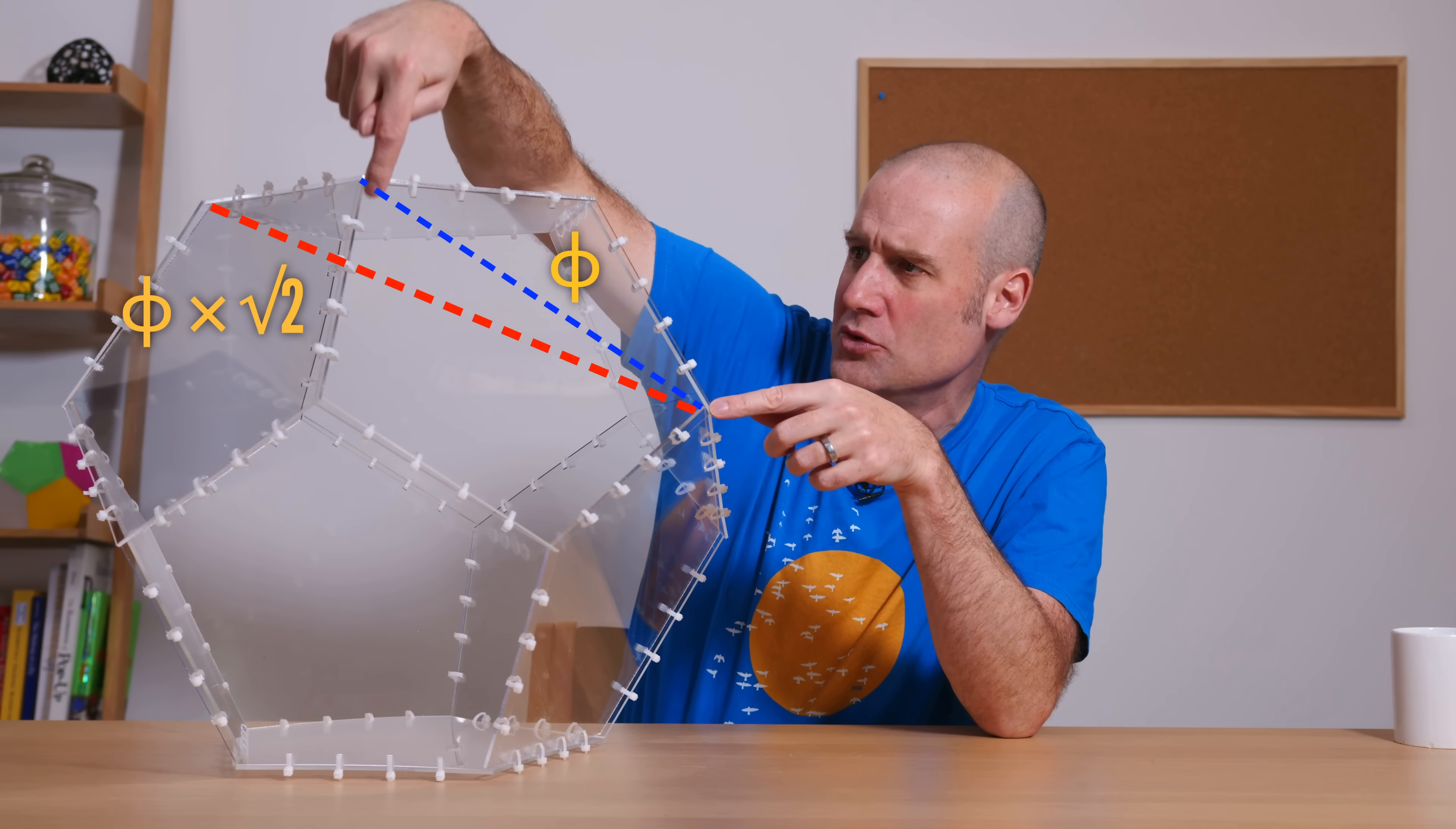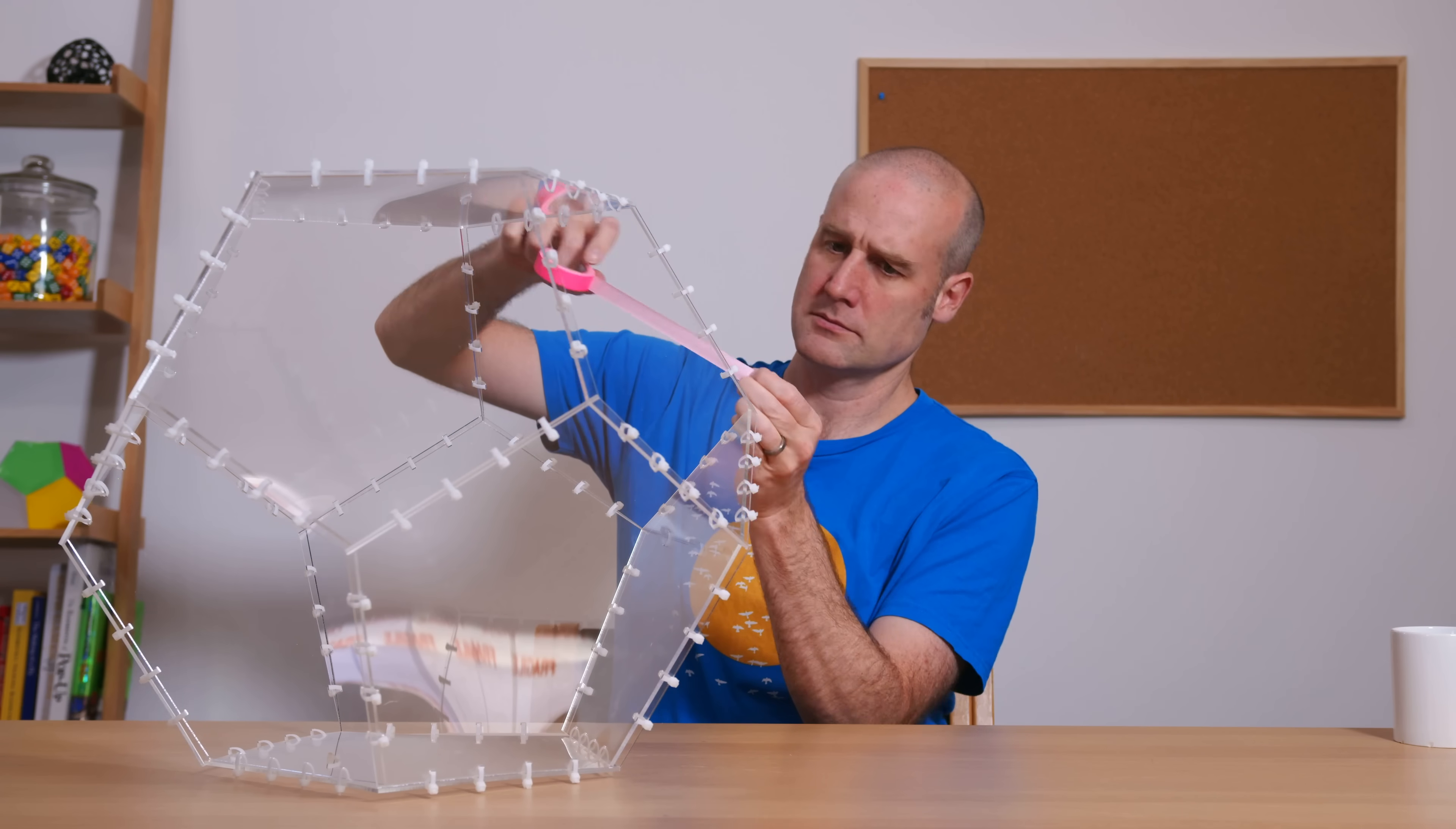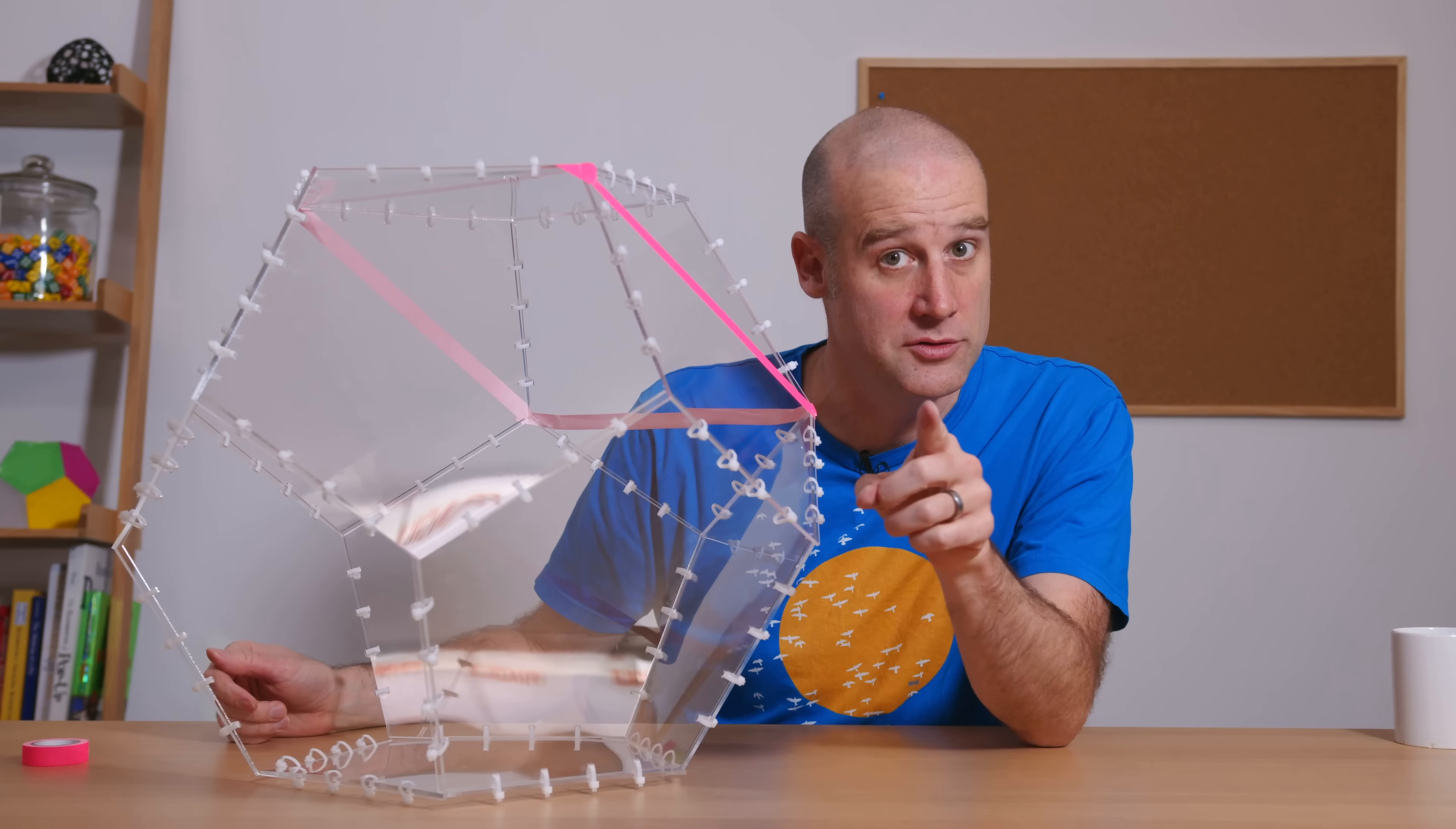So actually, if that's root 2, then this is the length of a diagonal from a square made out of the face diagonal. So let's, I'll mark them on. Here we go. One there. That corner. There.